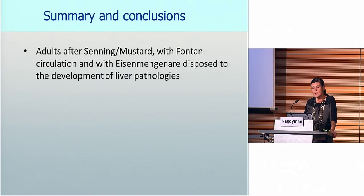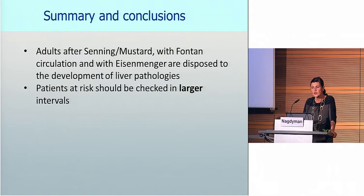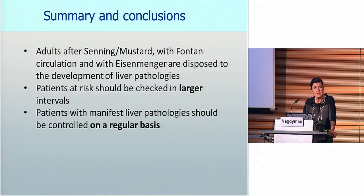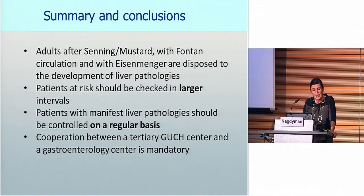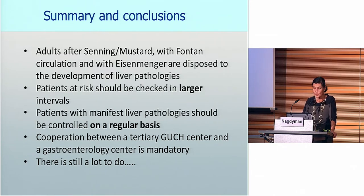What we can clearly state from this study is that adult patients with Zenning, Mustard, Fontan, and Eisenmenger are suffering from liver problems, and we should check them at regular intervals. If we find something, they must be followed on a regular basis together in a tertiary center with an experienced gastroenterology group. There is still a lot to do in this area. Thank you for your attention.